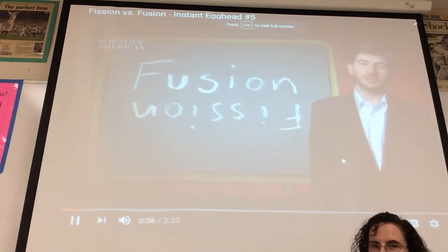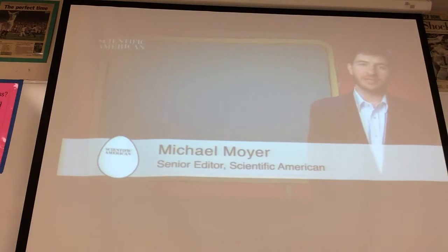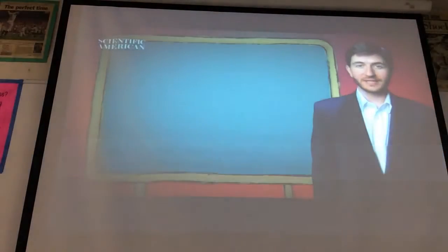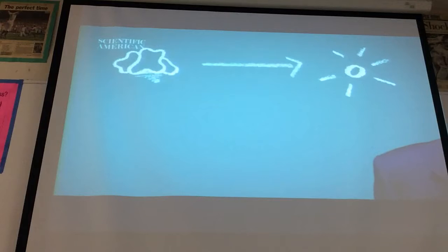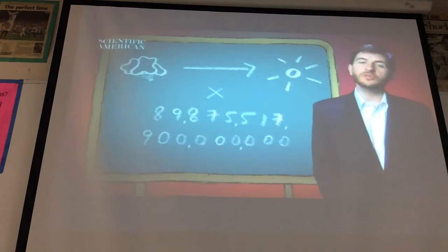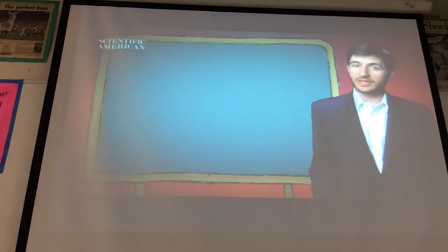Fusion and fission are cousins. The yin and yang of nuclear physics. Both turn matter into energy using the most famous equation in all of science. E equals MC squared. The equation tells us that matter can turn into energy. And when it does, it gets multiplied by the speed of light squared. A very big number. Both fusion and fission convert a little bit of matter into a lot of energy. So how do they differ?